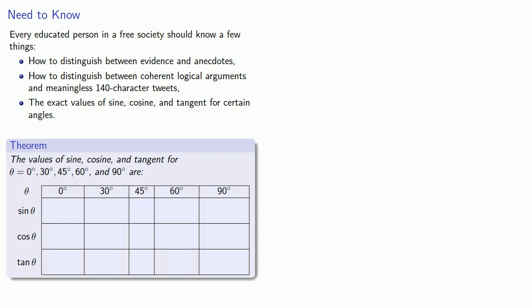So the sine of 0 is 0, and the cosine of 0 is 1. The sine and cosine of 30 degrees is 1 half and square root of 3 over 2, respectively.